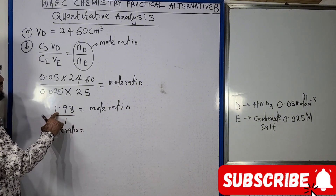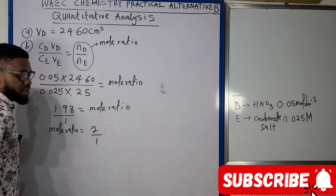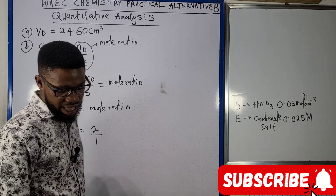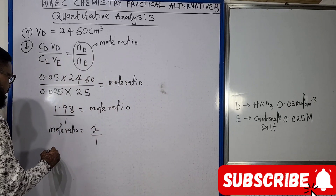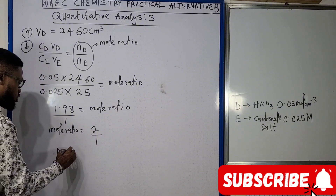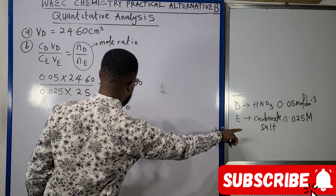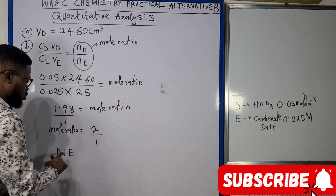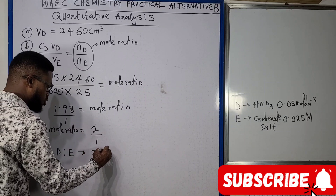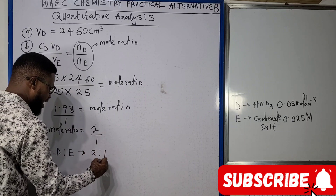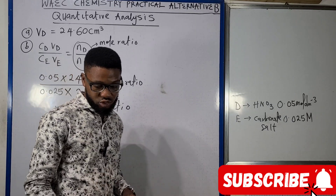1.98 is approximately 2, so the mole ratio expressed as 2/1 means D to E is 2:1. That is the answer to question B — the mole ratio of acid to carbonate is 2:1.